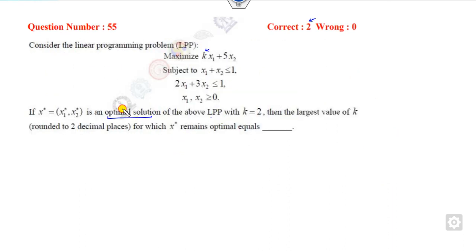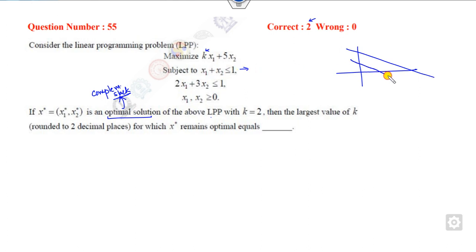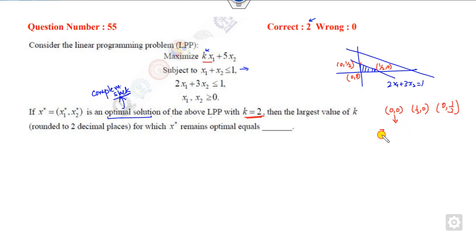Now look at the last example. Whenever an optimal solution is given to you, apply the complementary slackness result — that will give you a very simple answer. To find the optimal solution: the line x1 plus x2 equals 1 and the line 2x1 plus 3x2 equals 1 are the constraints, and the optimal feasible solution corresponds to the point (0, 1/3). The other corner points are (1/2, 0) and (0, 0). With k equal to 2, the corresponding z-values are 0, 1, and 5/3, so the optimal solution is x1 equals 0, x2 equals 1/3.